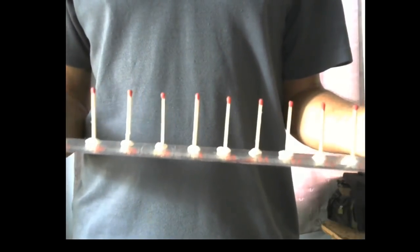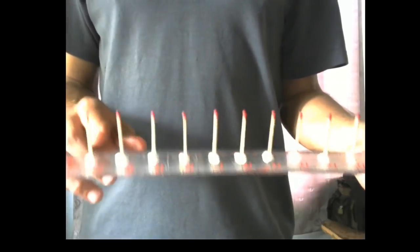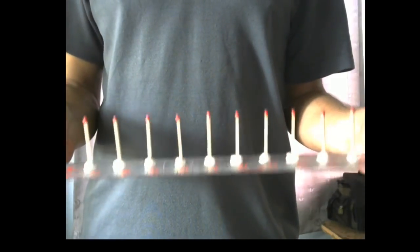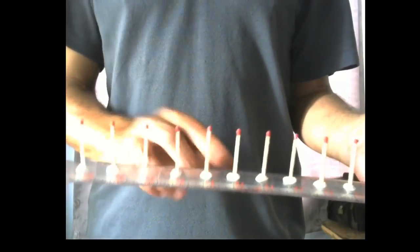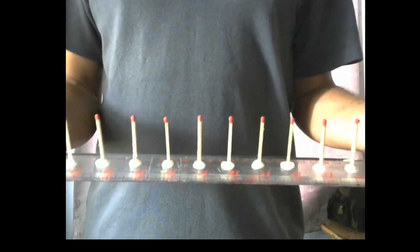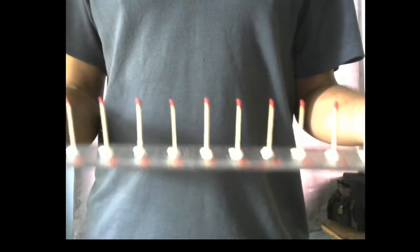In fact it doesn't fit with reality at all. So just use your imagination to have this ruler representing the surface of the Earth and the distance between these matchsticks can be whatever you like. It can be a mile, ten miles, a hundred miles, a thousand miles. It's really up to you.